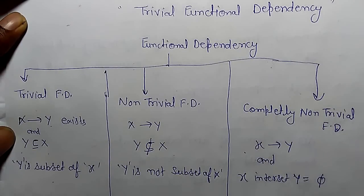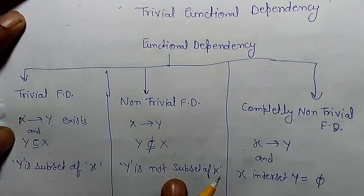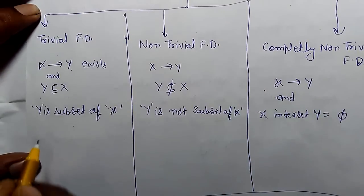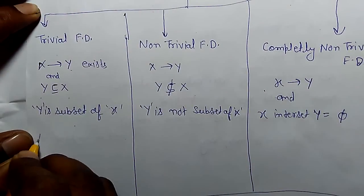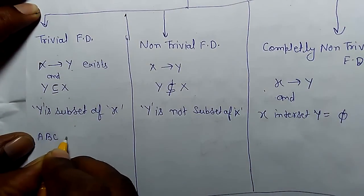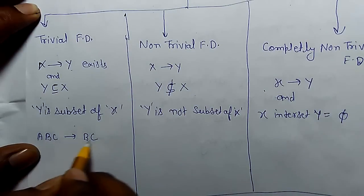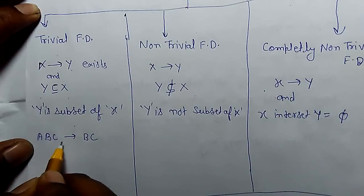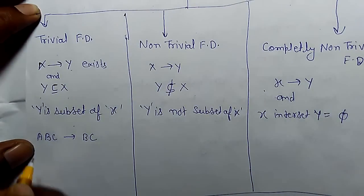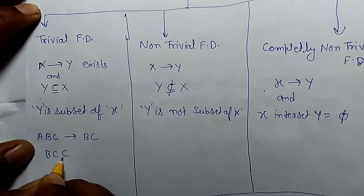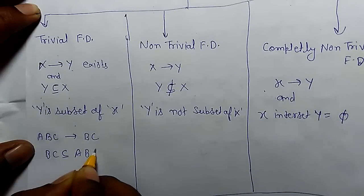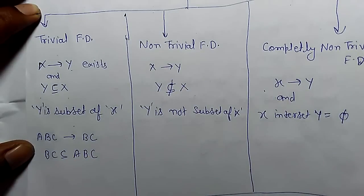For completely non-trivial functional dependency, if X and Y intersection is phi (empty set), then it is completely non-trivial functional dependency. Let's take some examples. In case ABC functionally determines BC — this means BC is a subset of ABC.